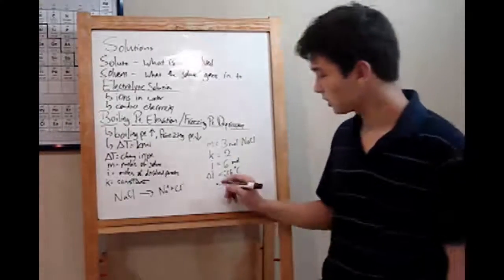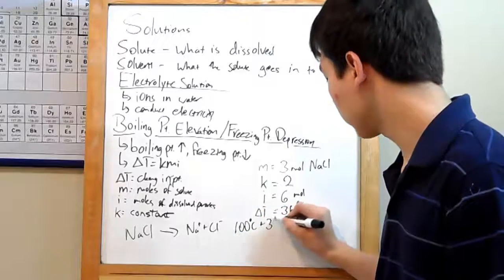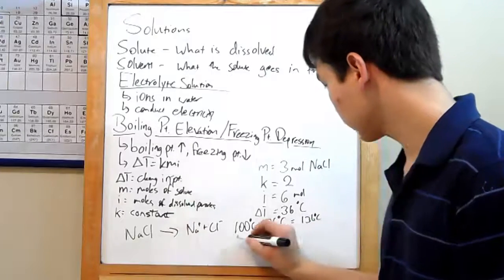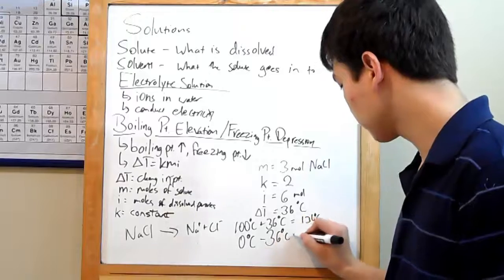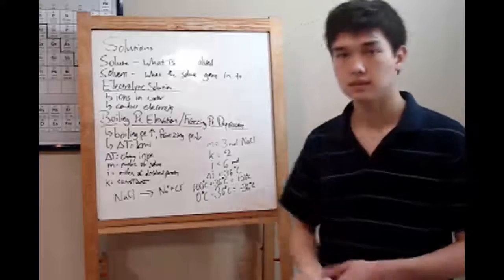How do you apply this? Well, your boiling point for water is 100 degrees Celsius. Add your delta T and you get 136 degrees. Your freezing point is 0 degrees. This time, subtract your 36, and you get negative 36 degrees Celsius. And then you're done.